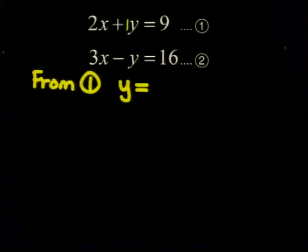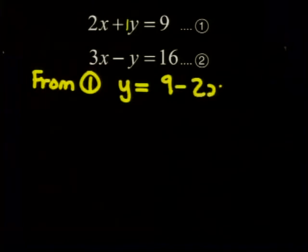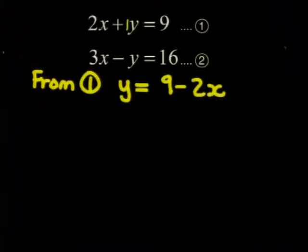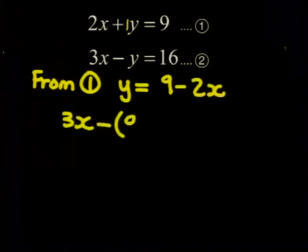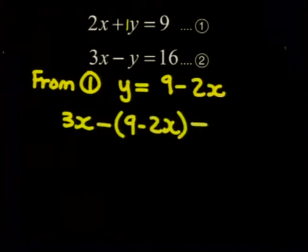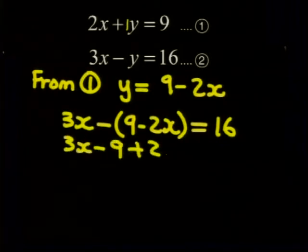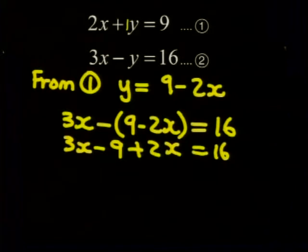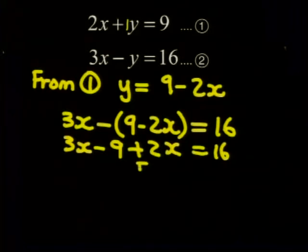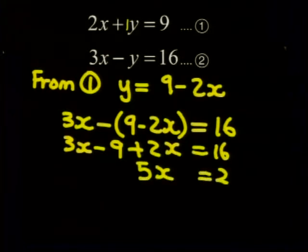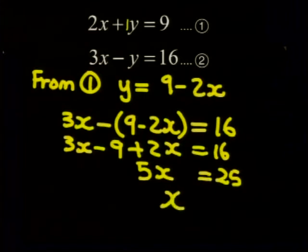If I put this value of y into the second equation, I'll be left with only x's. So 3x minus all of 9 minus 2x is equal to 16. The whole bracket must be subtracted, so I must be careful with the signs. 3x minus 9 plus 2x is equal to 16. So 5 times x is 25. So x is 5.